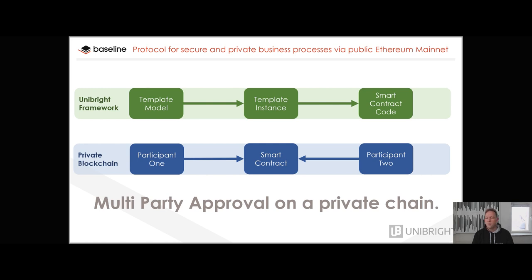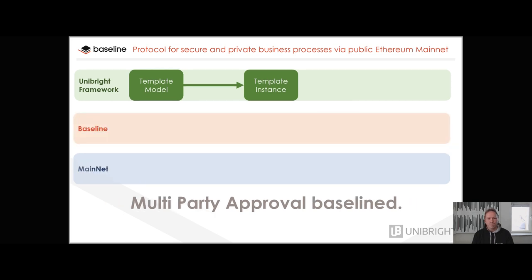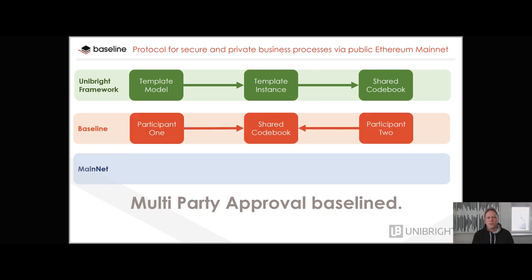One of the main goals of the baseline protocol is to provide privacy in business processes while still using the publicly available blockchain with its countless nodes that contribute to the overall security of the system — using that public blockchain as a kind of middleware or messaging bus. In baseline, the complete process looks like this: you still have a template model and a template instance, but instead of creating a smart contract you create something called a shared code book. This shared code book holds the workflow of the approval process in whatever code — for example Solidity, C#/.NET, or even SAP code — whatever the participating parties agree on.